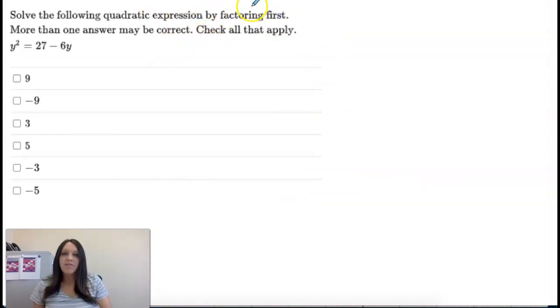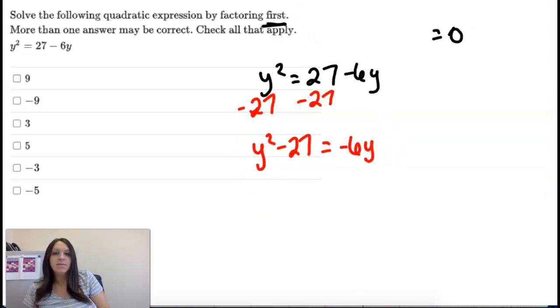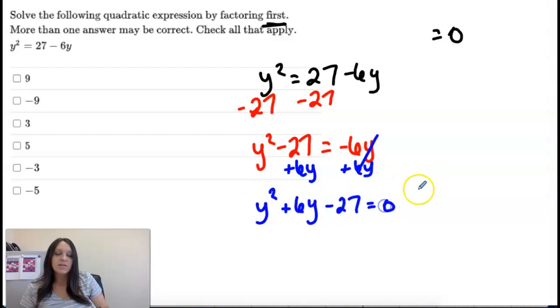Last one. Solve by factoring first. That means I'm going to check my answer graphing later. More than one may be correct. So when we factor, we need our quadratic equal to zero. So I'm going to get everything on one side of the equals sign. I'm going to subtract the 27. So I have y squared minus 27 equals negative 6y. And I'm going to add the 6y. And I'm going to write these in order. So I have y squared plus 6y minus 27 equals zero. And you write in order of degrees.